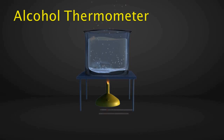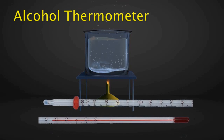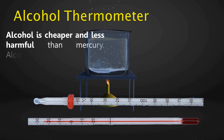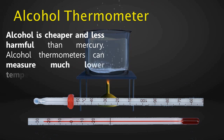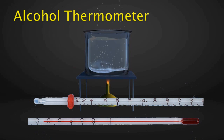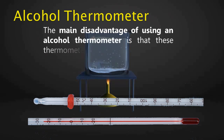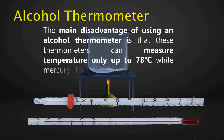Alcohol thermometer: thermometers that use alcohol have some advantages over mercury thermometers. Alcohol is cheaper and less harmful than mercury, and alcohol thermometers can measure much lower temperatures. However, the main disadvantage is that alcohol thermometers can only measure temperatures up to 78 degrees Celsius, while mercury thermometers can measure much higher temperatures.